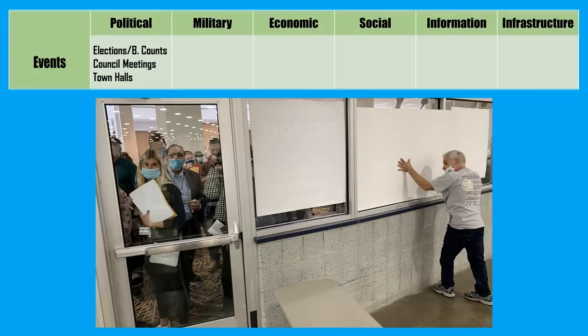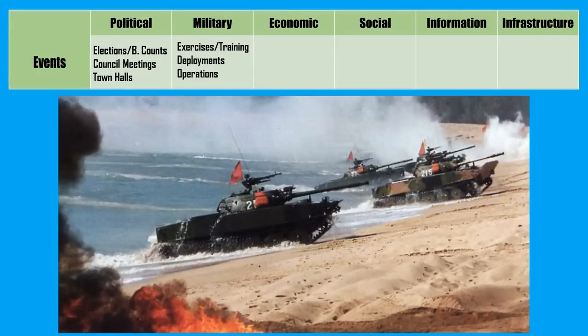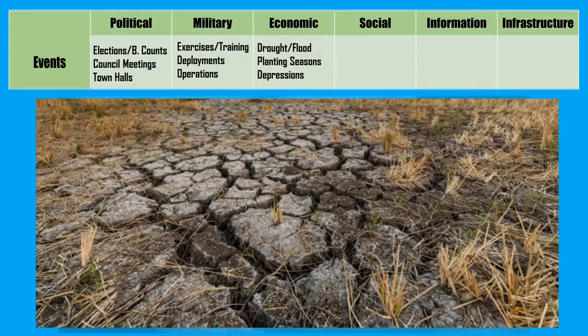Wrapping things up with events. We've got political events: elections, council meetings, town halls, or political holidays. Military events: military exercises, holiday parades, displays of power projection, mobilizations, unit training schedules, or deployment rotations and schedules of operations. Economic events: droughts and floods, harvest and planting seasons, economic recessions and depressions, or even operating hours for merchants or banking holidays. Remember, the Colonial Pipeline was taken offline right before Mother's Day weekend — a big travel holiday for the United States — where a gasoline shortage was created. That's why it's important to keep track of these kinds of events.